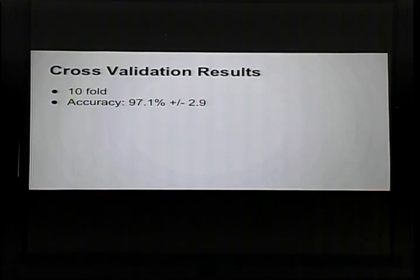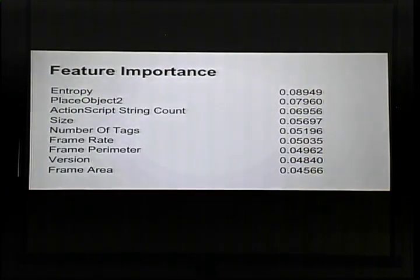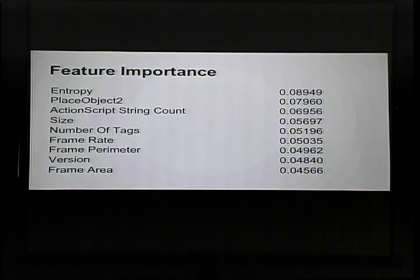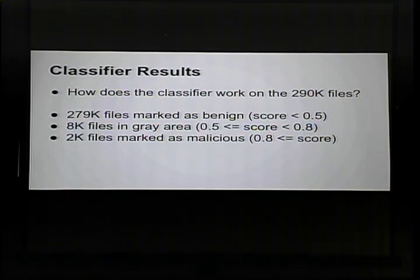We ran cross-validation on the ActionScript features and got maybe a tiny improvement — still at 97%, not as much improvement as hoped. Breaking down the numbers, it works equally well on benign and malicious. Feature importance shows the string count appearing but none of the other ActionScript features ranking particularly high. Testing on the 209,000 files: 8,000 were in the gray area and 2,000 marked as malicious — way better than I expected judging by our cross-validations, and better than the Java classifier on first try.